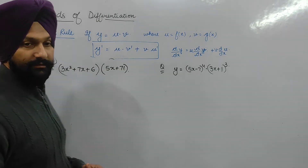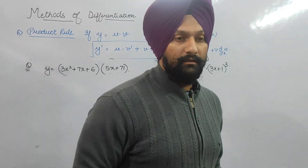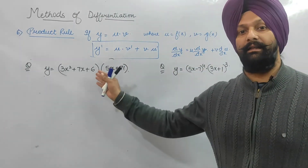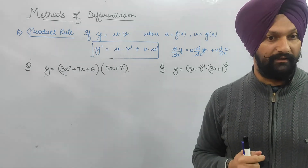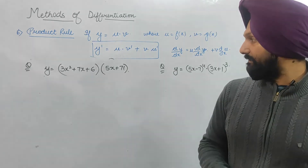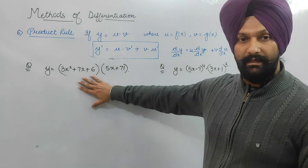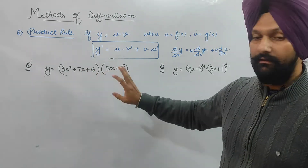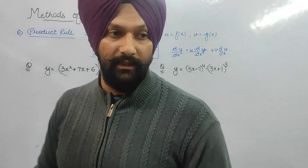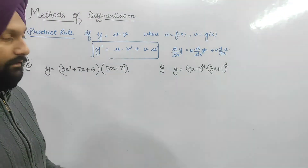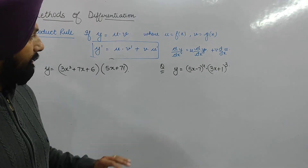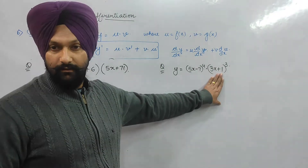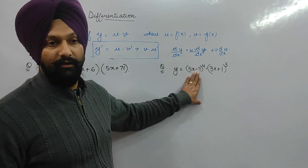Someone asked whether we should multiply first and then apply the sum or difference rule. You can do that when there is a quadratic and a linear function — you can create a cubic and then differentiate. But for something like (5x − 7)², without applying binomial you cannot solve it that way, so we must understand the importance of the multiplication rule.